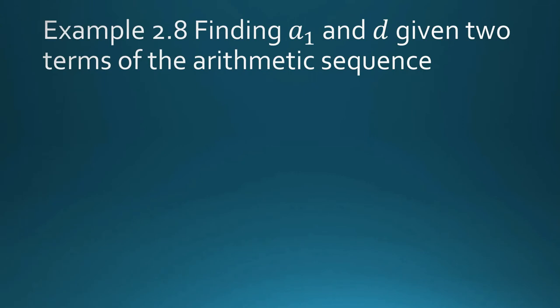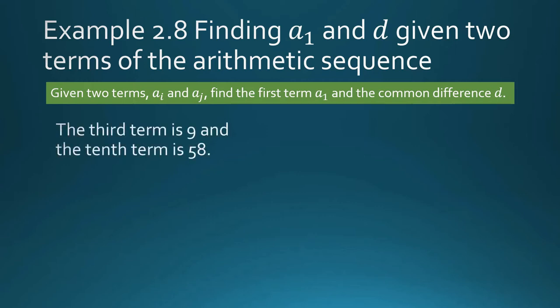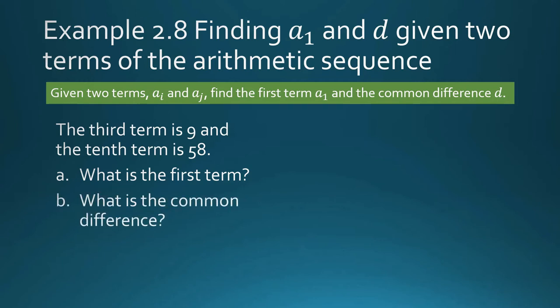Example 2.8: finding the first term, a sub 1, and d, the common difference, given two terms of an arithmetic sequence. The third term is 9 and the tenth term is 58. So what is the first term and what is the common difference?